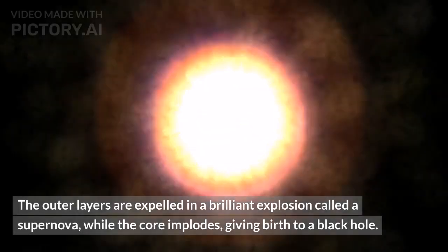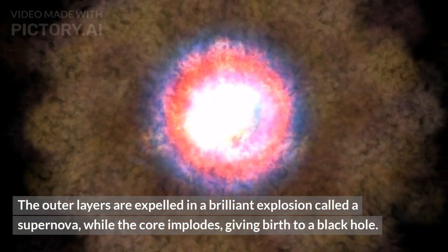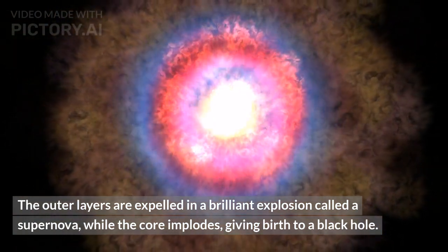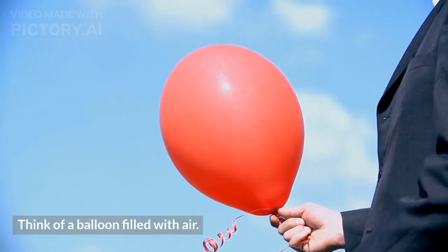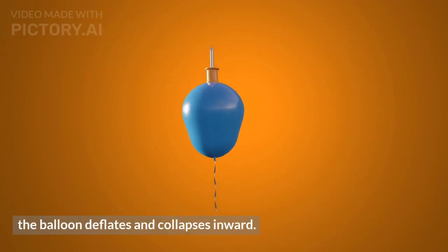The outer layers are expelled in a brilliant explosion called a supernova, while the core implodes, giving birth to a black hole. Think of a balloon filled with air. When you release the air, the balloon deflates and collapses inward.